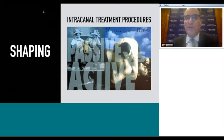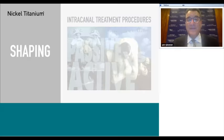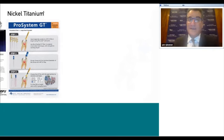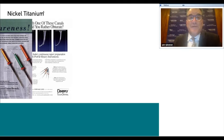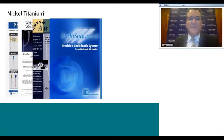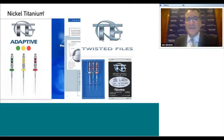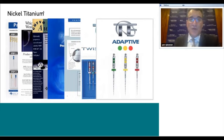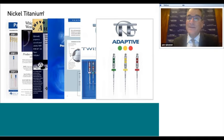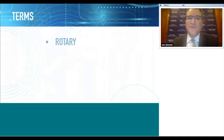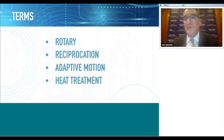There are lots of nickel-titanium files—ground files, heat-treated ground files, twisted files. My favorite is TF Adaptive, with an intuitive color coding based on a traffic signal: green is first in sequence, yellow is second, and red is third. Green means go, yellow means continue or stop, and red means stop. When a file rotates continuously in a curved canal, two stresses are placed upon it: torsional stress and cyclic fatigue.